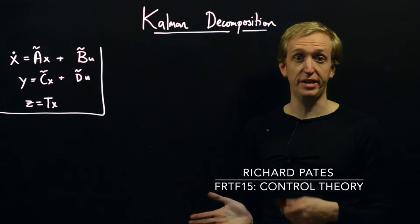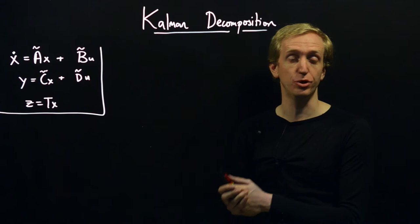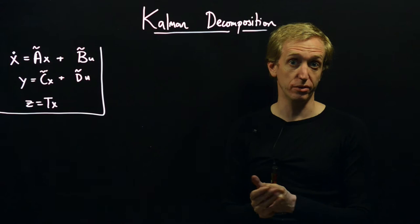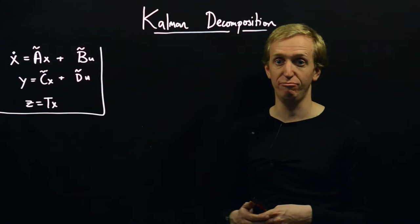To finish up, we're just going to talk about Kalman decomposition. The Kalman decomposition is a particular coordinate transformation of a state-space model that reveals various interesting internal features of the model, especially when the system is not controllable or not observable or both.